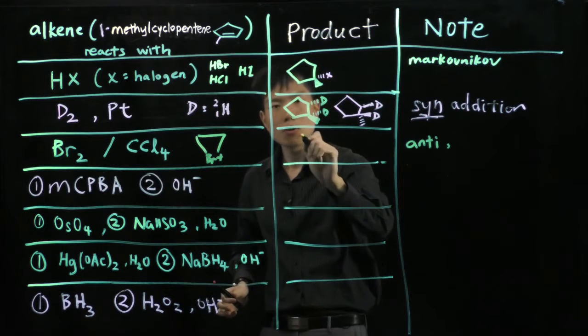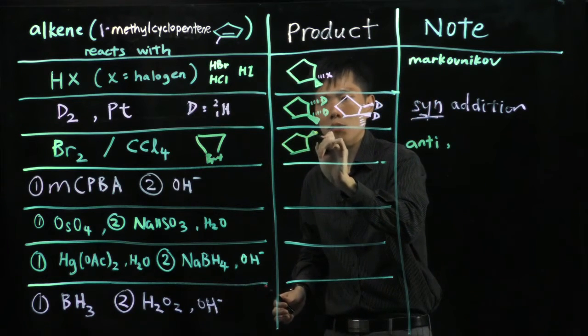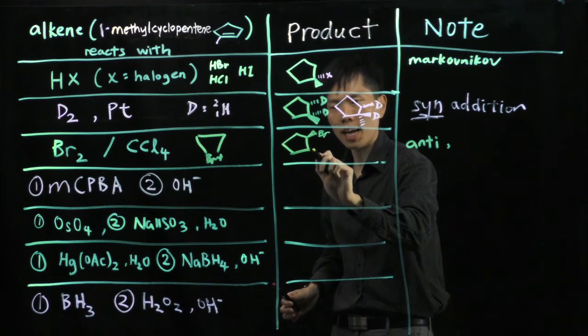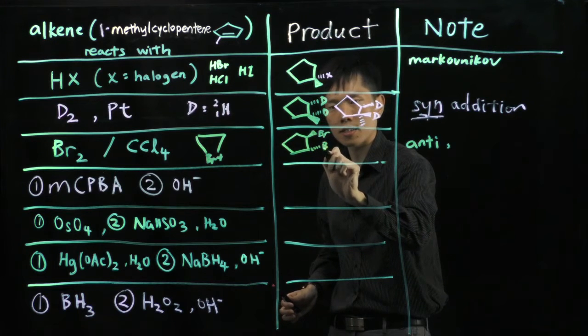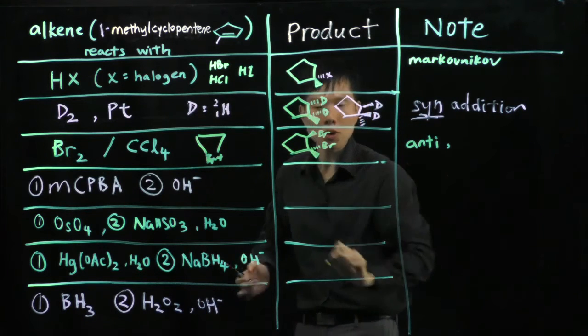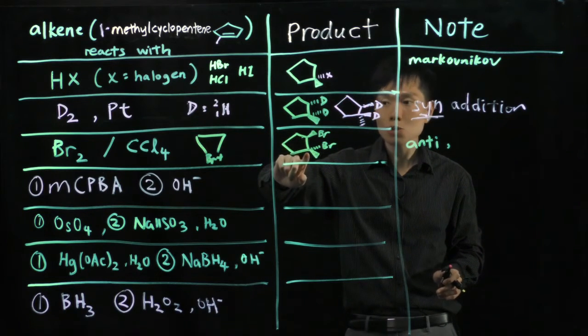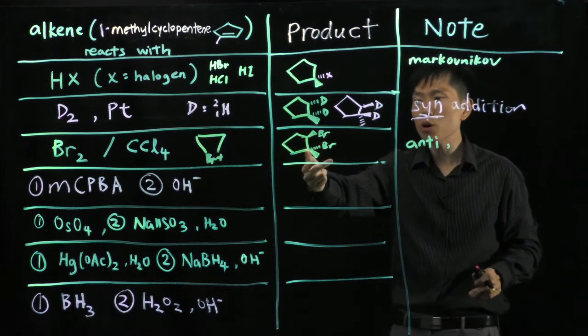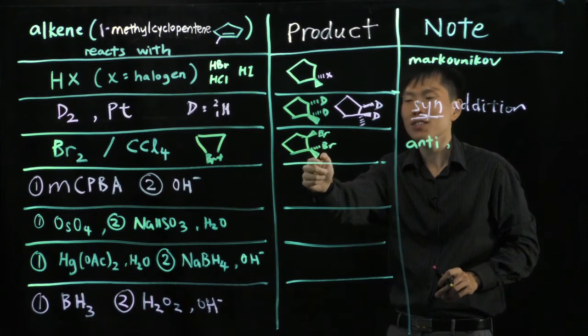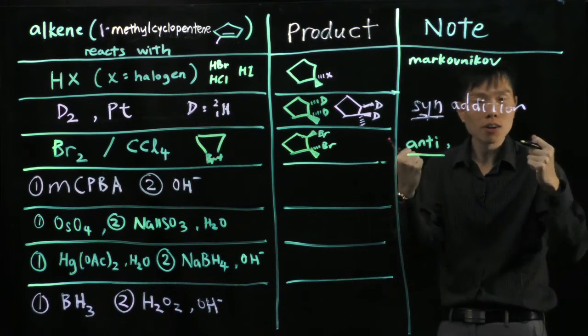So what you have in the end would look something like this. Suppose this Br points up, the other Br must point down. So what about this methyl group? The methyl group must point up, because now we are seeing that these two lines are on the same plane. And this carbon is sp3 hybridized, it's tetrahedral. So the last two bonds we have to depict using the wedge bond and the hash lines. And since the Br takes the hash lines, the methyl group must be the wedge bond. Remember, anti-addition of the two Br on the opposite side.